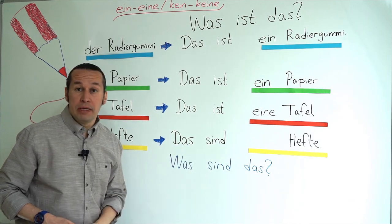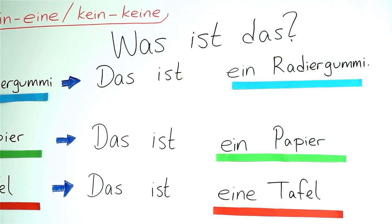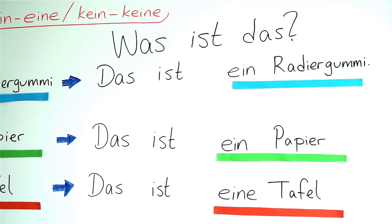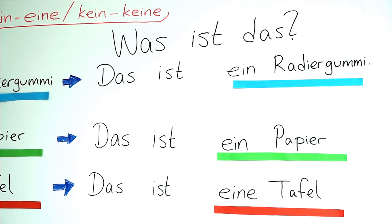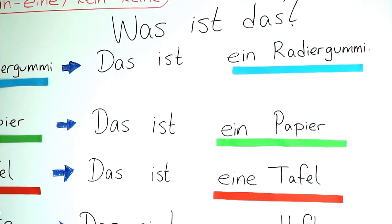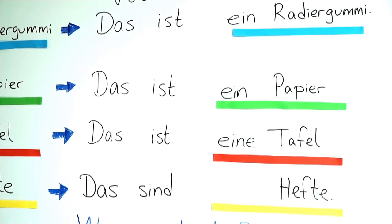Repeat after me please: Was ist das? — Das ist ein Radiergummi. Was ist das? — Das ist ein Papier. Was ist das? — Das ist eine Tafel.